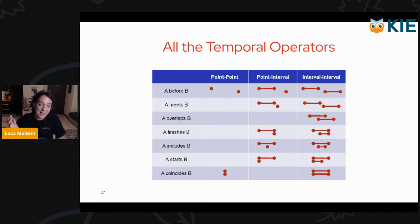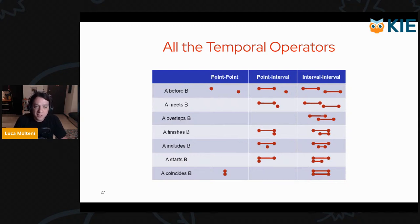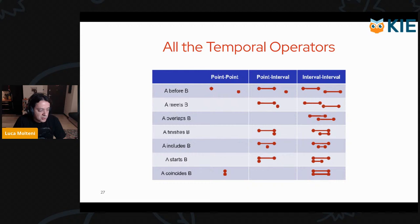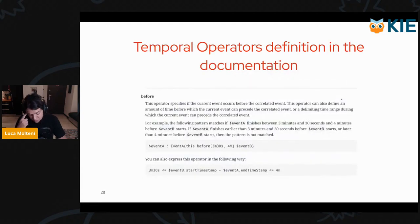I wanted to talk about all the temporal operators. This is an interesting diagram of how they behave regarding point-to-point or point-to-interval relationships. If you have only point-based events, you can basically use only 'A before B' or 'A coincides B.' If you have a mixture of point-interval or interval-interval, you can use all the other temporal operators. 'Meets' is the operator we saw before — in the interval-interval case, which was the monitoring system example, the reboot happened exactly after the first one within a period of one hour.